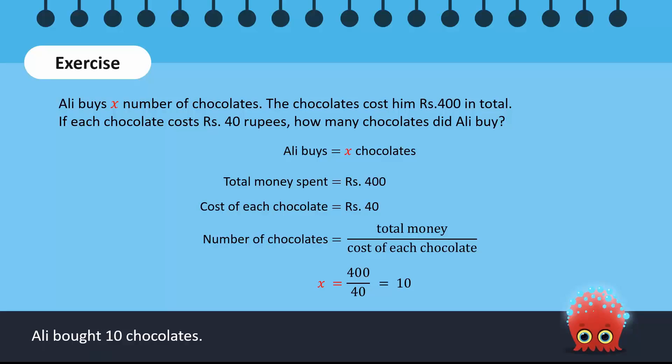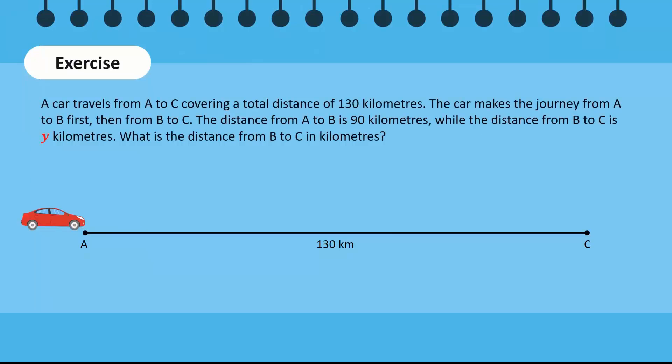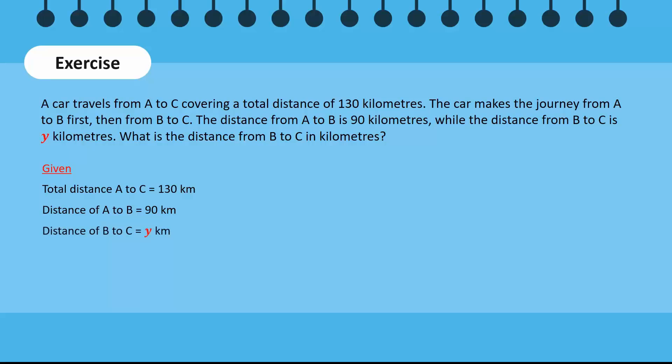Let's look at another question. A car travels from A to C covering a total distance of 130 km. The car makes the journey from A to B first, then from B to C. The distance from A to B is 90 km while the distance from B to C is y km. Since the total distance A to C is equal to 130 km, the distance of A to B is equal to 90 km and the distance of B to C is equal to y km. We know that the total distance A to C is equal to the distance from A to B added to the distance from B to C.